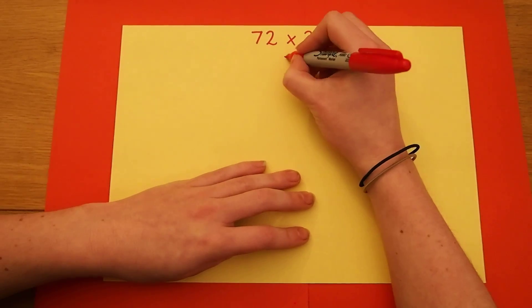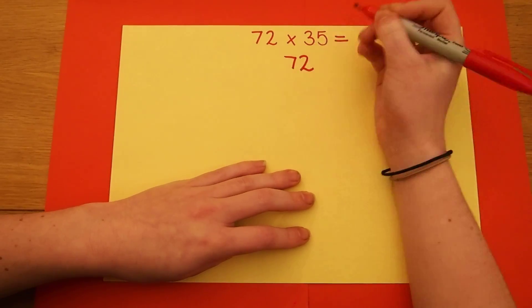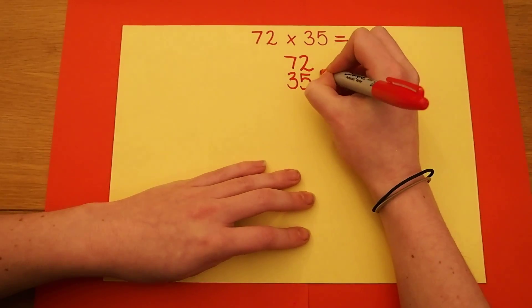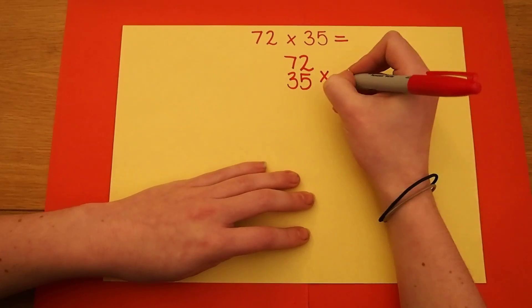We start by putting both numbers underneath each other in their tens and units columns, and I show that I'm multiplying by putting the sign here.